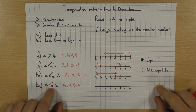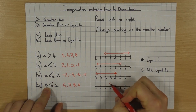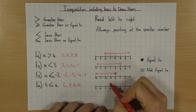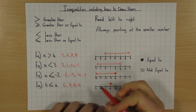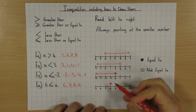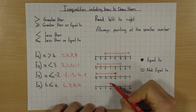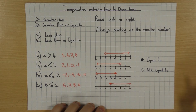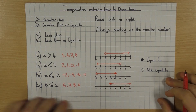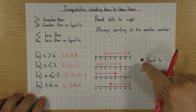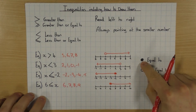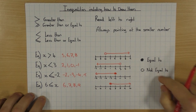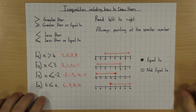So this one here, I'm going to put my circle over 6. It is equal to, so I'm going to colour it in, and since x is bigger, I draw an arrow going up my number line. So: solid circle means equal to, clear circle means not equal to.